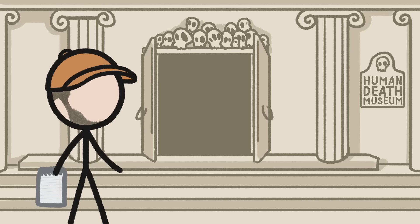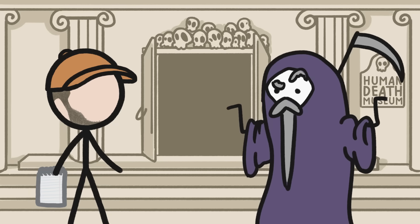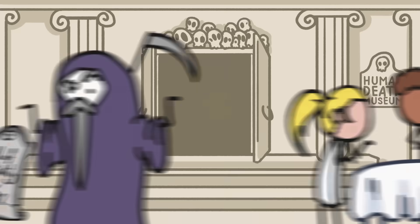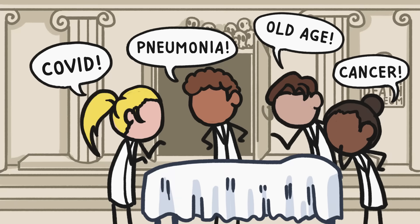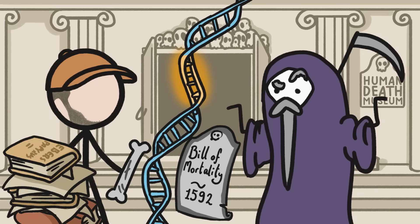Before we take that tour, we should probably note that it's super hard to quantify who died of what way back when. Until recently, humans didn't really keep death records, and it can be hard even today to determine what actually killed a person. But by putting together a bunch of disparate information, scientists and historians have been able to make some pretty educated guesses about the most common causes of death throughout history.